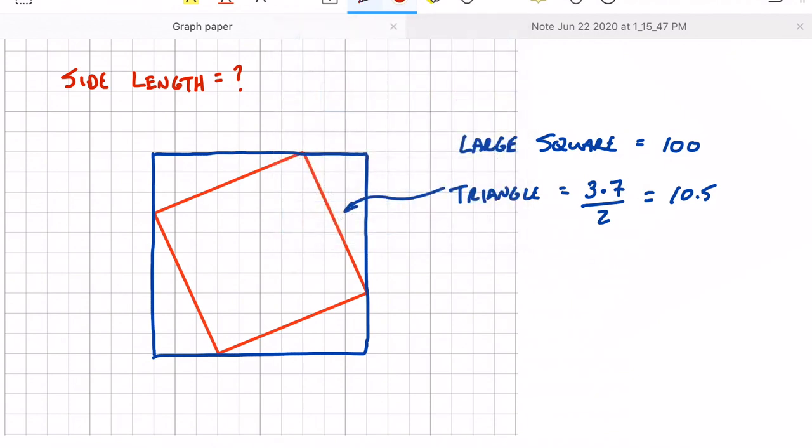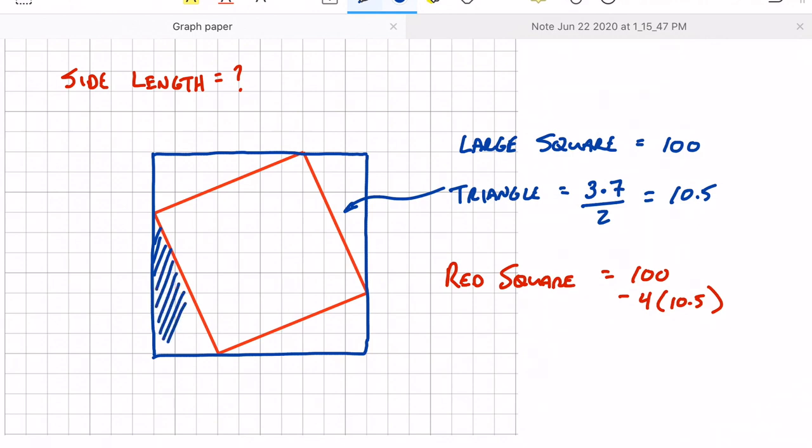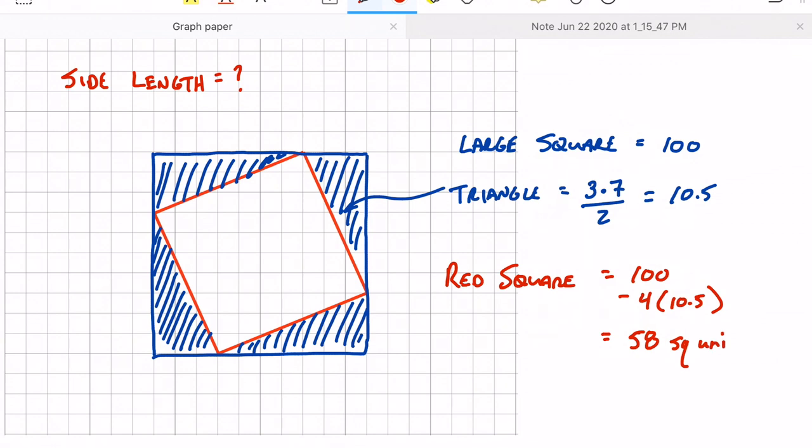Now, if we want to find this small square's area, this red square, what we're going to have to do is take our 100, which is the large square, and then subtract away 4 of these triangles. The reason why I'm subtracting them away is because, really, they were never in the problem to begin with. I really only created them so that I could figure out what this red area is. So if I were to subtract away these four blue triangles, you see what I'm left with is this red square. Well, 100 subtract 4 times 10.5 is 58. So my area of that red square is 58 square units.